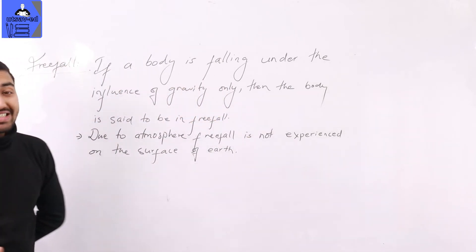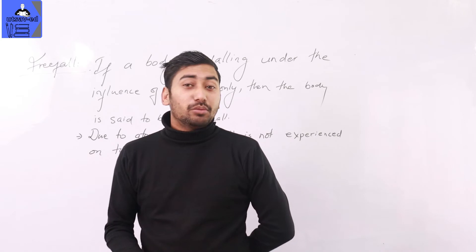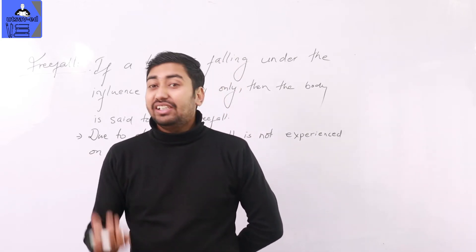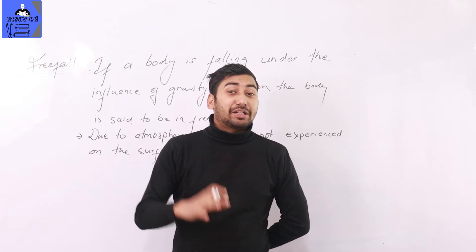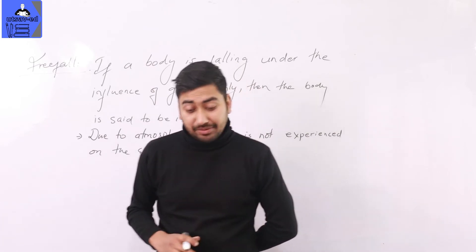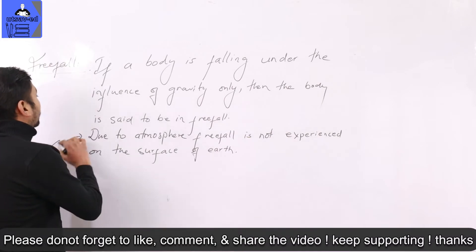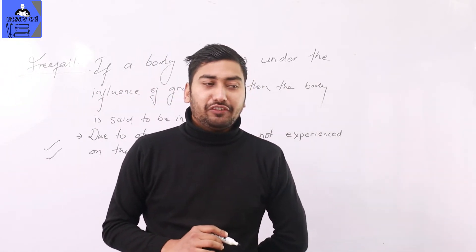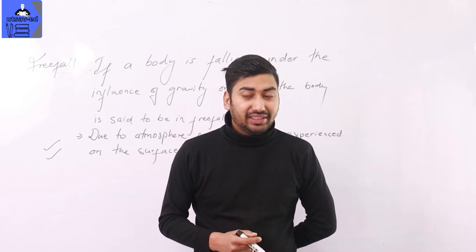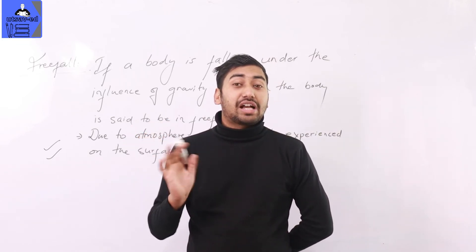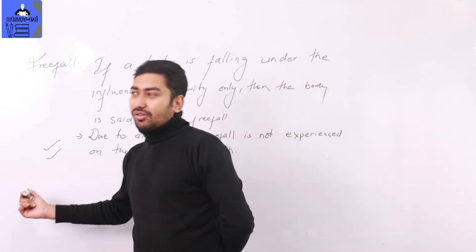On Earth's surface, free fall is not naturally experienced because of air resistance. For example, on the moon there is no atmosphere and no opposing force, so on the moon a body falls under the influence of gravity — that is free fall. In a controlled environment like a vacuum chamber, free fall can be experienced. Free fall is very important — related questions include: why can you not experience free fall on Earth, and why a ball and a feather dropped on the surface do not fall simultaneously — because of air resistance.